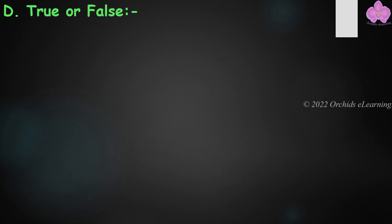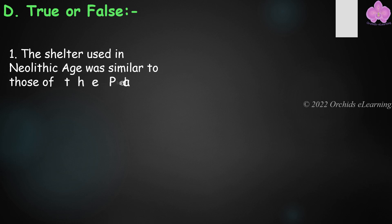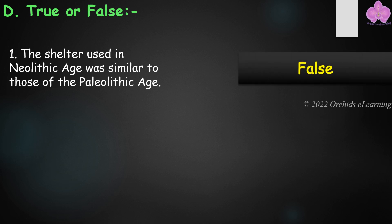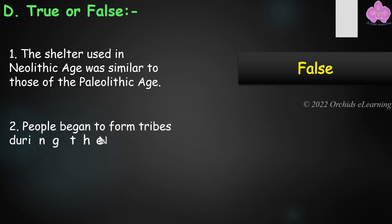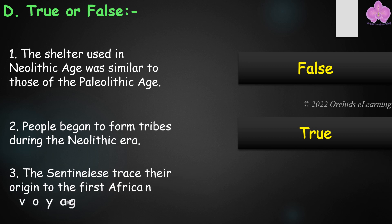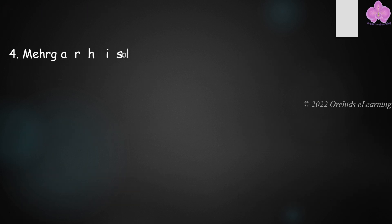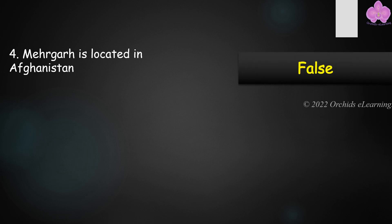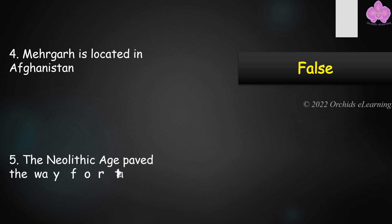State true or false. The shelter used in the Neolithic Age was similar to those of the Paleolithic Age — False. People began to form tribes during the Neolithic Era — True. The Sentinelis traced their origin to the first African voyages of the prehistoric period — False (Mehergarh). Mehergarh is located in Afghanistan — False. The Neolithic Age paved the way for the Chalcolithic Age — True.